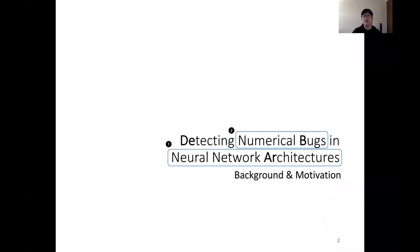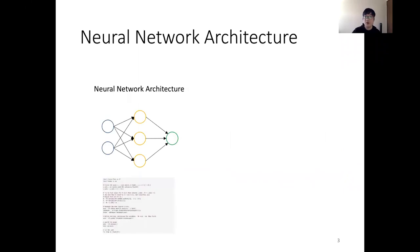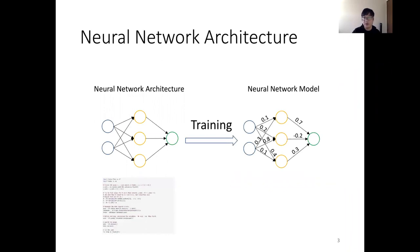We'll first talk about the background and motivation of our paper — what are neural network architectures and what are numerical bugs. A neural network architecture is just a piece of code that specifies the different connections between different neurons with various neural network operations. After training, we get a neural network model with a set of unexplainable parameters on its edges. Existing work focuses on testing, verification, and bug detection on the model level. However, in this work, we propose to detect bugs at the architecture level.